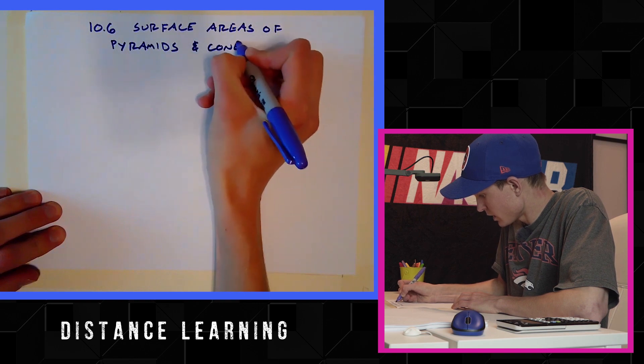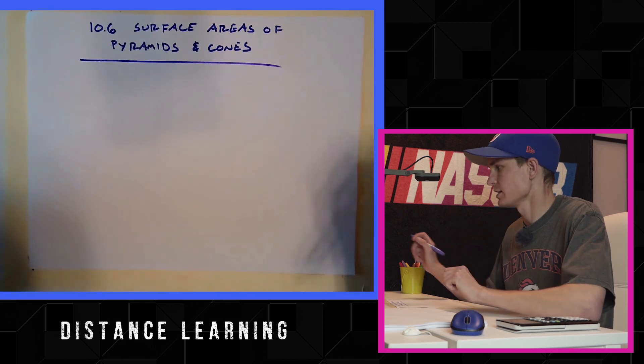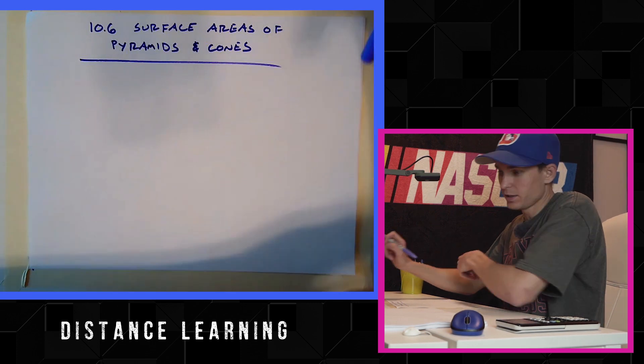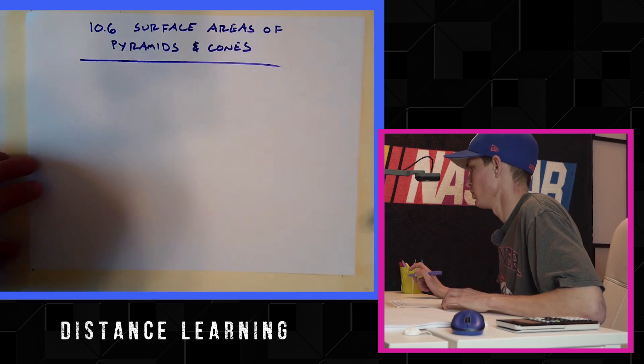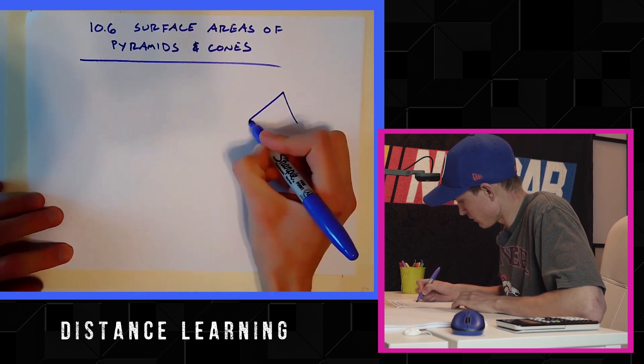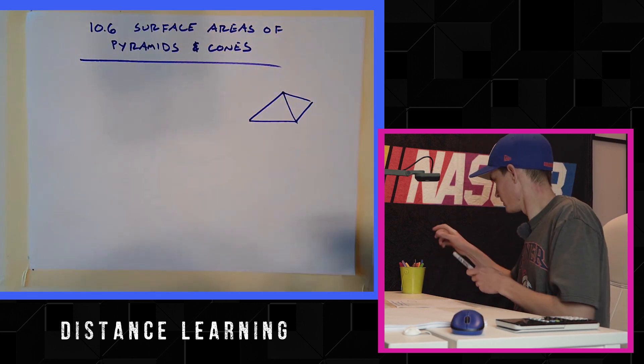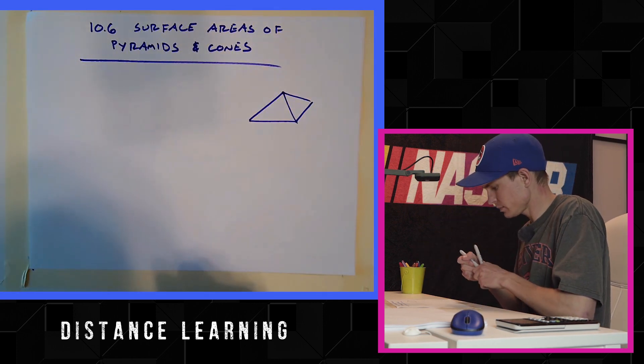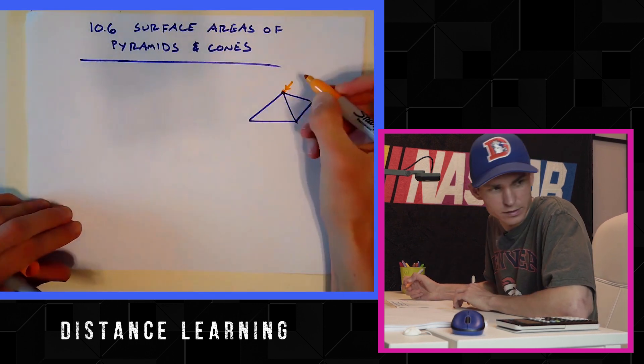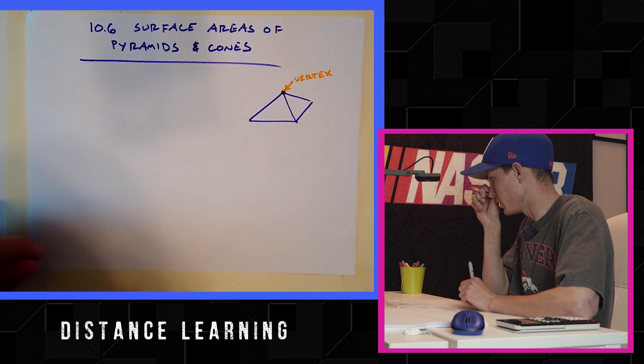Now cones can only have a circular base. That's about all it has. However, pyramids could have all sorts of different shaped bases, so that'll be where it's a little bit different. If you have a book to follow along with, this is my attempt at drawing a pyramid. Not terrible. So this tippy top right here is the vertex of the pyramid.